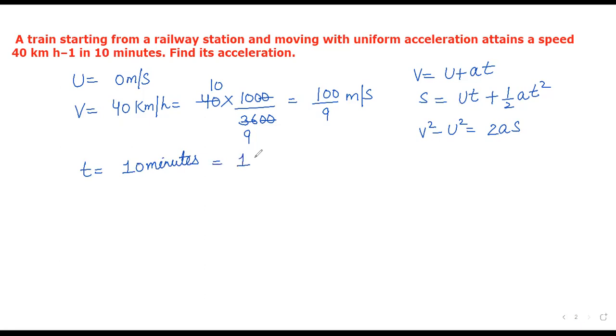We need to find acceleration. We have V, U, and t, so we use the first equation: V = U + at. Substituting: 100/9 = 0 + a(600).